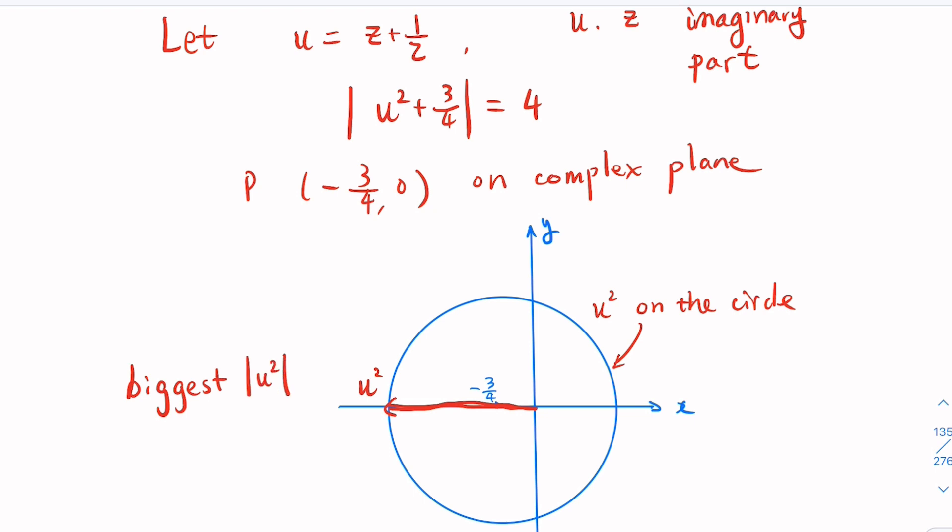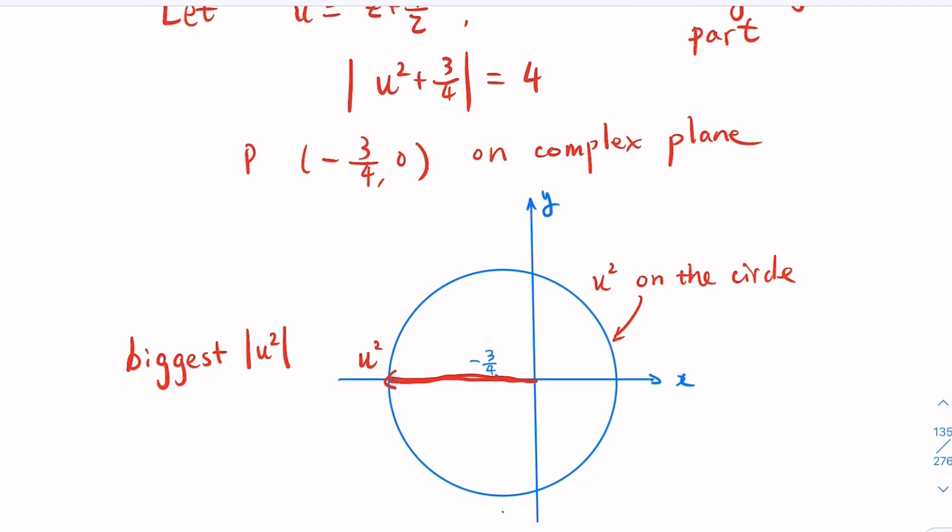And what is the value here? So u squared modulus at this special point here has a value of the radius is 4, because this equation here says the distance is 4, so 4 is the radius. And this point is negative 3 quarter, so 19 over 4 is the modulus here.